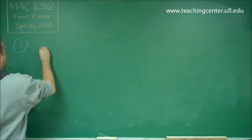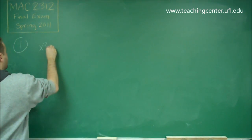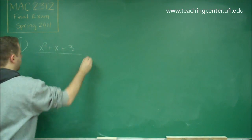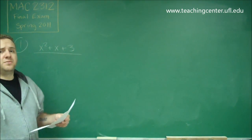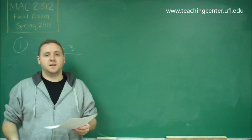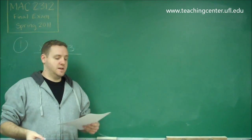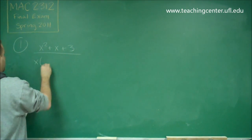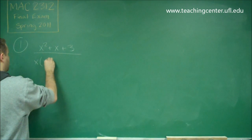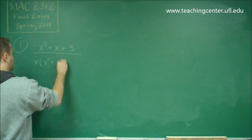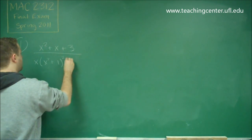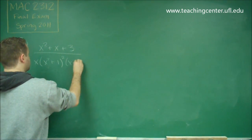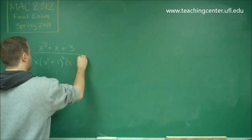We start with x squared plus x plus 3, and our denominator is already factored for us. That's not always going to be the case — sometimes you're going to have to factor it yourself. We get x, (x squared plus 1) squared, and (x minus 2) squared.